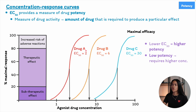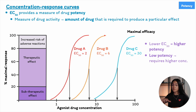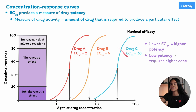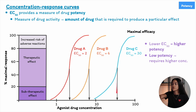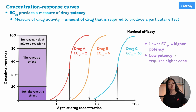Drug A reaches its full effect at a much lower concentration than drug B or C. Drugs with lower potency require a higher concentration and have a high EC50, appearing on the right side of the CRC.